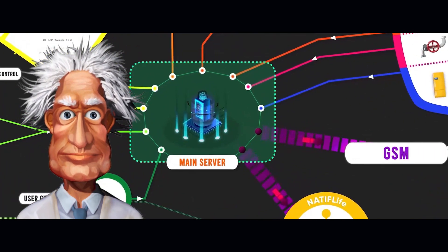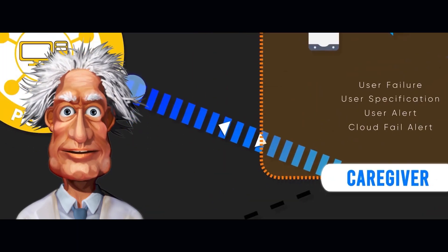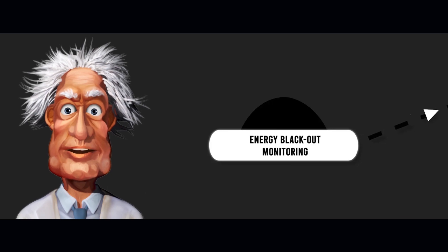If the caregiver is offline, he will receive an SMS alert through GSM. GSM is also activated in case of breakdown.